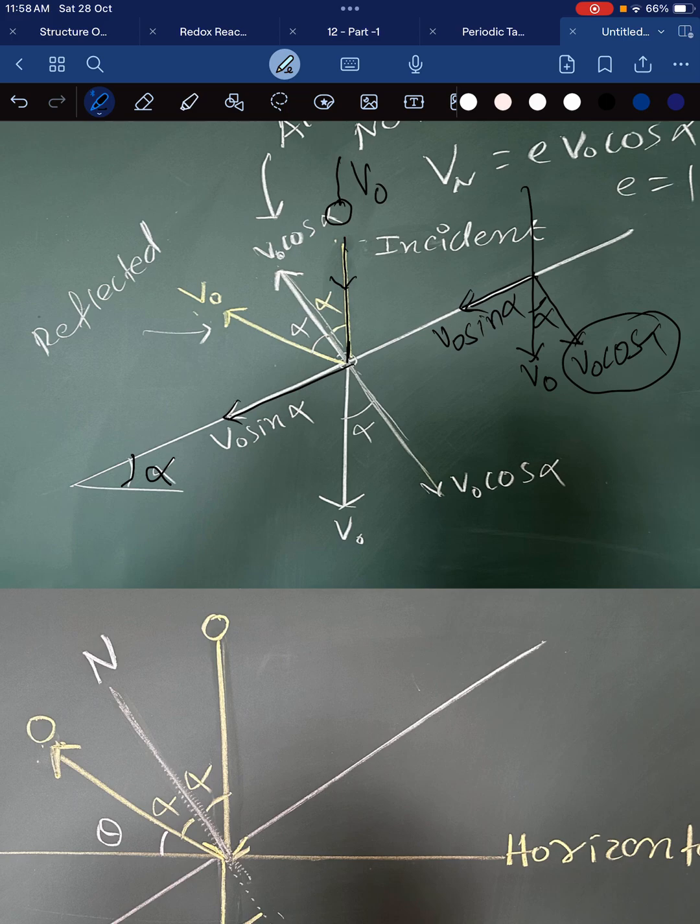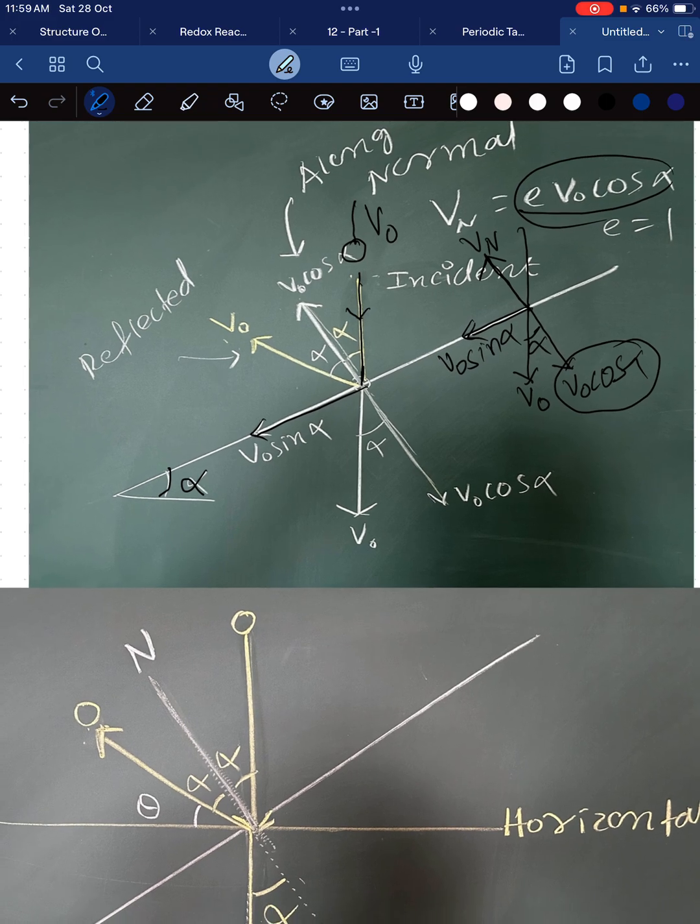The component, this component will rebound in this direction, and the new velocity normal to the plane is v n, which is given by e v naught cos alpha, where e is the coefficient of restitution.